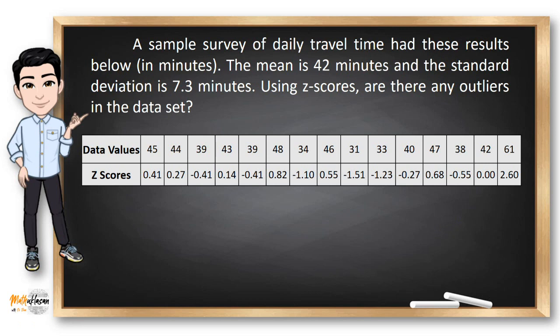To identify the outlier, all we need to do is to identify z-scores less than negative 3 and z-scores greater than positive 3. Are there any numbers less than negative 3? We don't have one. How about numbers greater than positive 3? We also don't have a number greater than positive 3. So, we can now say that these data values using z-scores has no outliers.